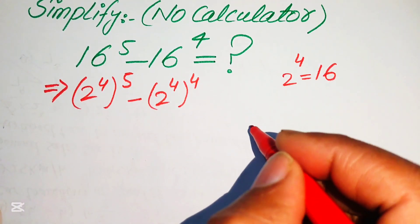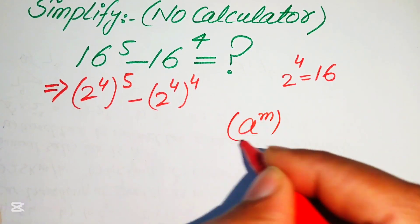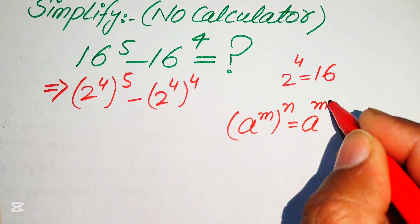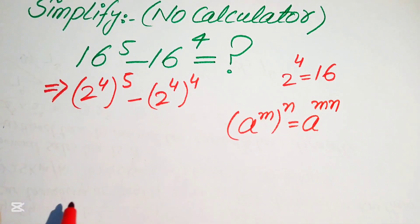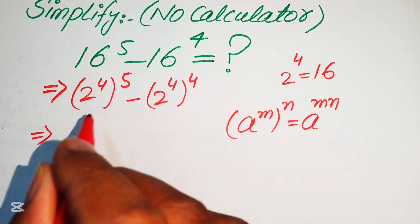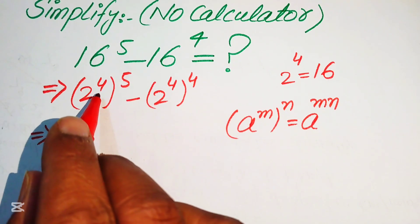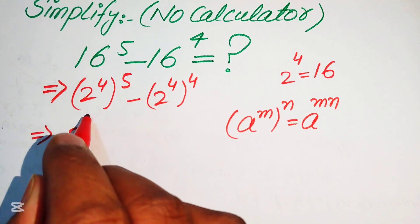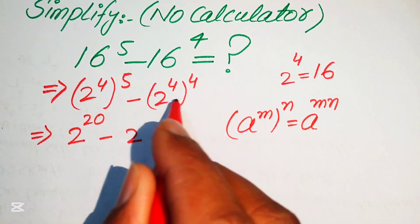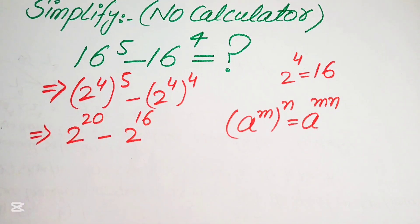After that we use the exponential law: if we have a to the power of m, to the power of n, it equals a to the power of m times n. Applying this law to both terms gives us 2 to the power of 20 minus 2 to the power of 16.